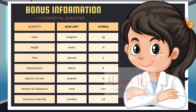Here is your bonus information. We have 7 fundamental quantities: mass, length, time, temperature, electric current, amount of substance, and luminous intensity. For example, for length, the base unit is meter with symbol small letter M. For temperature, the base unit is Kelvin with symbol big letter K. For amount of substance, the base unit is mole, written as M-O-L.